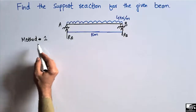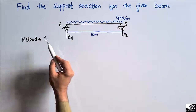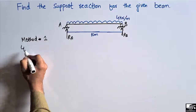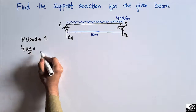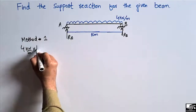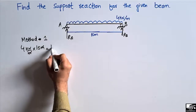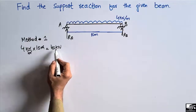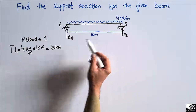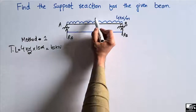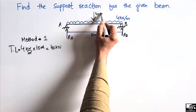To find out the reaction using the first method, when there is a uniformly distributed load on a simply supported beam, you take the load acting on the beam — which is 4 kilonewton per meter — and multiply it by the length over which it is distributed, which is 10 meters. The units cancel, giving us 4 × 10 = 40 kilonewton. This is the total load acting on the simply supported beam, and this load will act at the center of the beam.